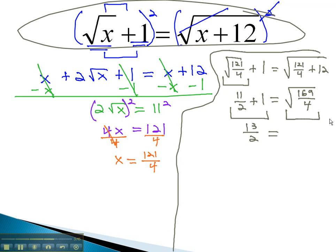On the right side, taking the square root of a fraction, we know we can take the square root of the numerator and denominator. The square root of 169 is 13, and the square root of 4 is 2. Because it works on both sides, giving us the same thing, 121 over 4 is the solution to this equation.